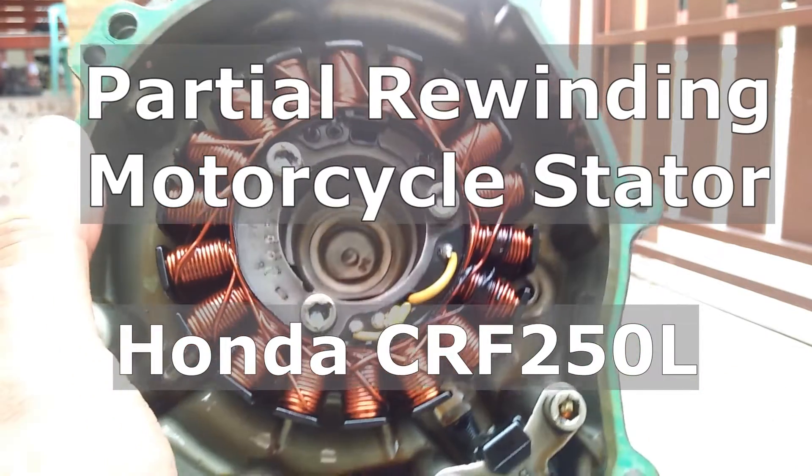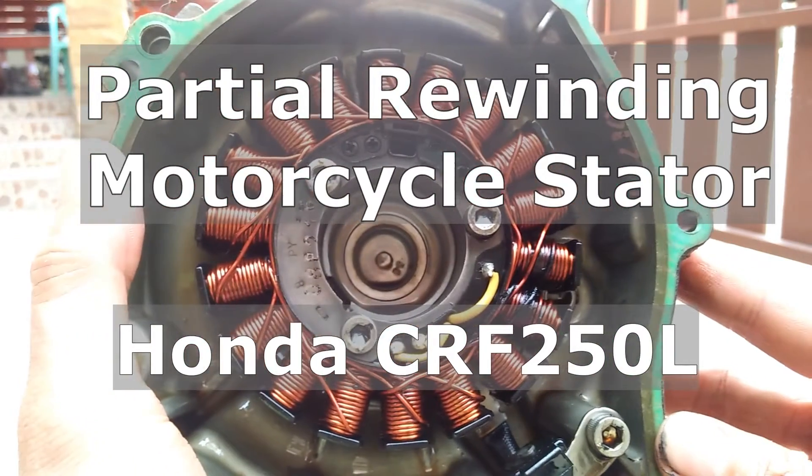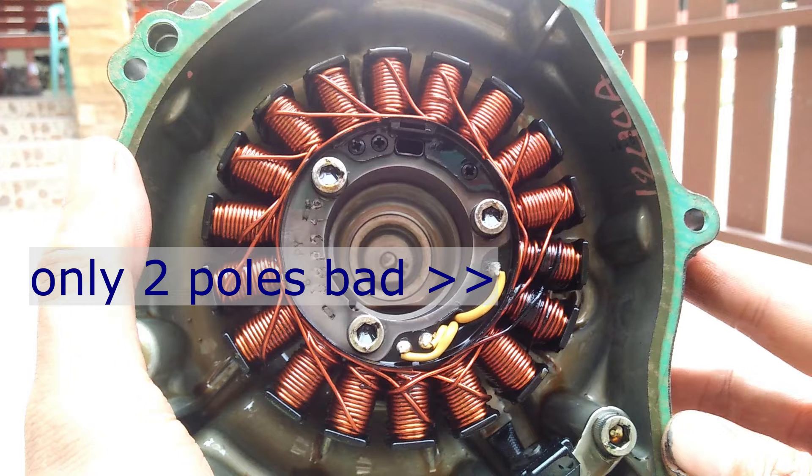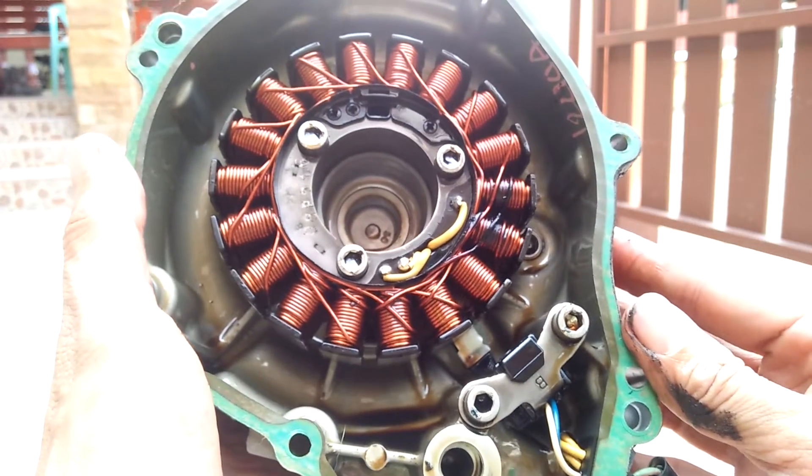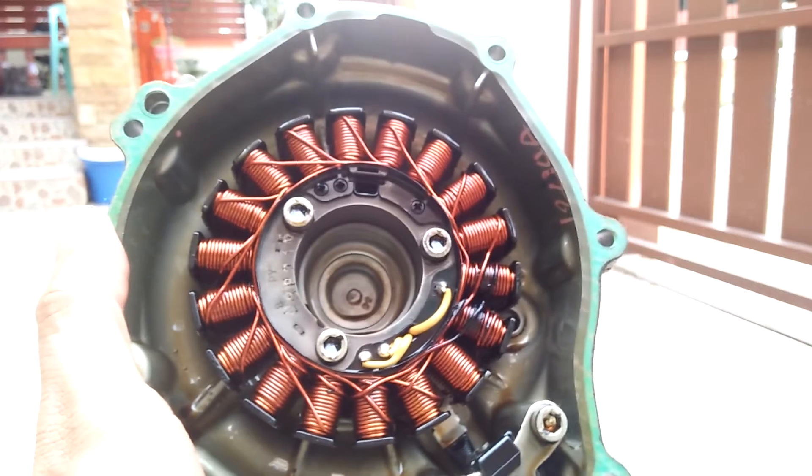As you can see in this stator, two poles have burnt out wire insulation. Now my plan is to rewind only the windings in these two affected poles, so it will be a partial rewinding of the motorcycle stator, something that I have never seen before on YouTube.